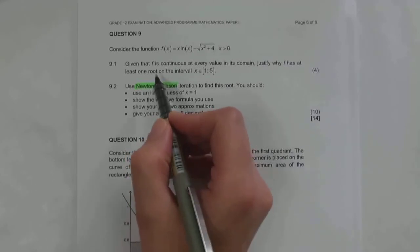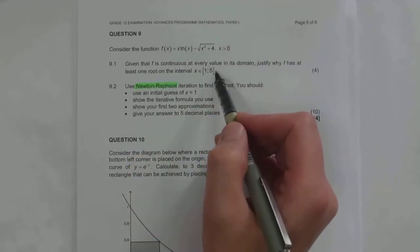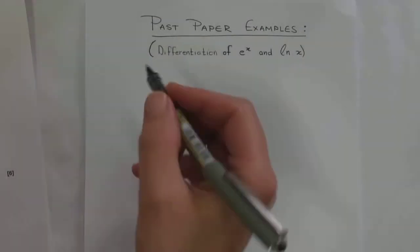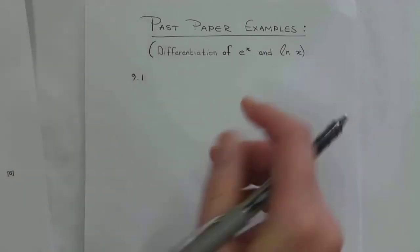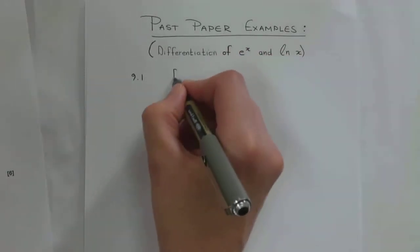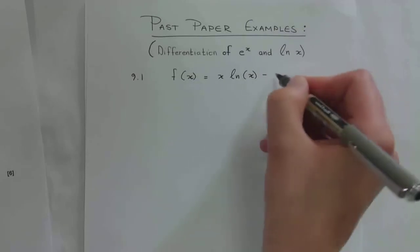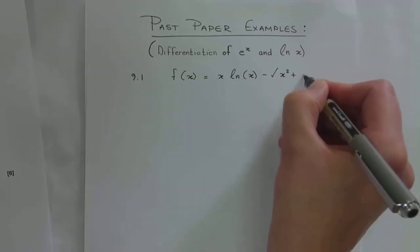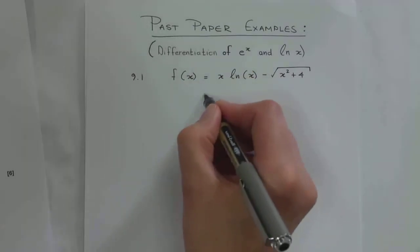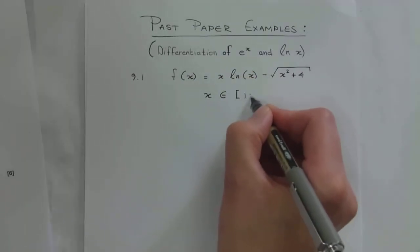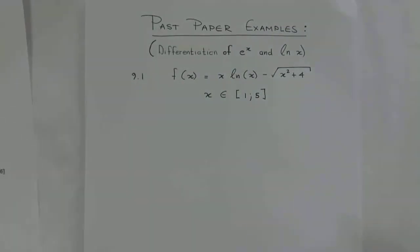Normally with a Newton-Raphson question, we use Newton-Raphson to find zeros or roots. If I want to prove that this particular function has at least one root, I need to prove that there's a zero for this function. So the function is f(x) = x·ln(x) minus the square root of x squared plus 4. They want me to prove that on the interval x from 1 to 5 there's at least one root. In order for there to be a root, there's got to be a zero.